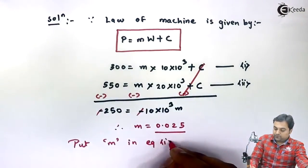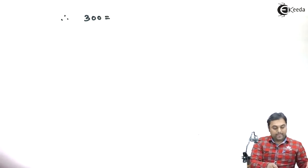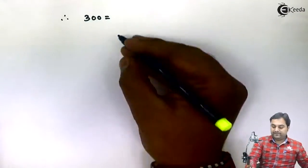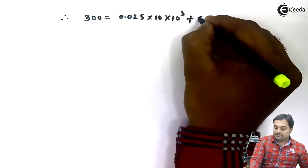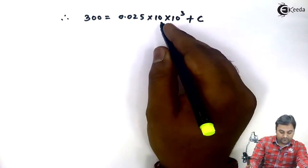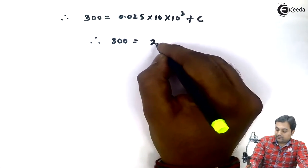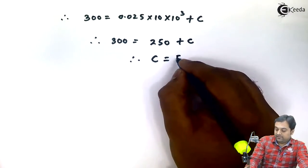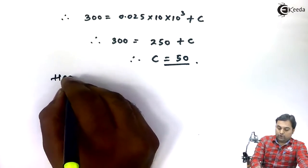Now substituting m = 0.025 back into Equation 1 to find C: 300 = 0.025 × (10 × 10³) + C, which gives 300 = 250 + C. Therefore C = 300 − 250 = 50 Newton.